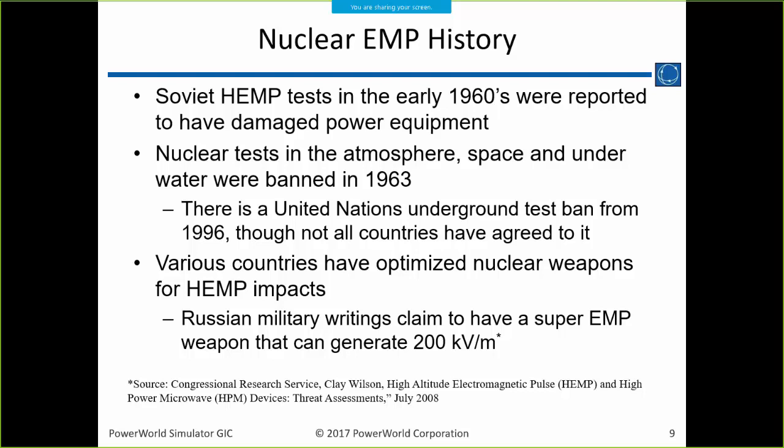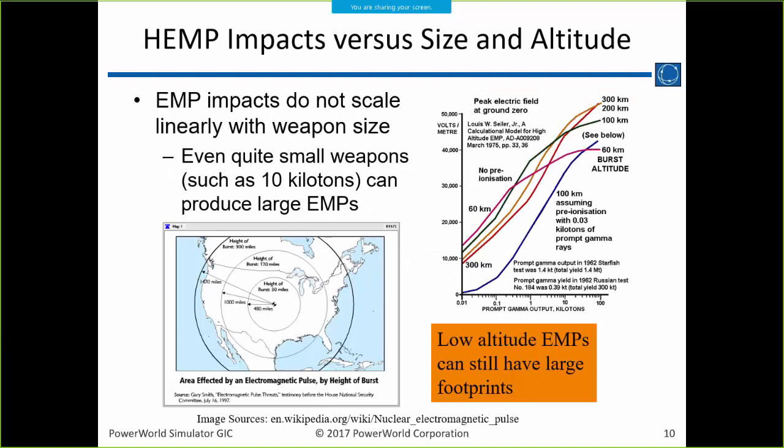A lot of this is classified. Various countries have optimized nuclear weapons for HEMP impacts. Russian military claims to have a super EMP that can generate fields of 200,000 volts per meter — whether that's true or not, I don't know. The size of the EMP does not scale linearly with weapon size. The assumption is that relatively small weapons — a 10-kiloton weapon like those from World War II — could still produce a fairly large EMP.